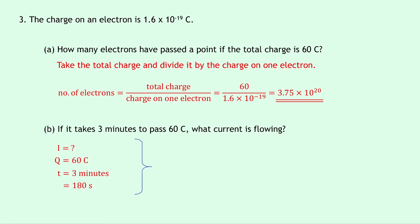And writing down the equation we have Q equals IT. Rearranging for I this time we divide both sides by T, so we get I equals Q over T. And substituting in the numbers we get 60 divided by 180. And if you put that into your calculator, you should get an answer of 0.33 amps.